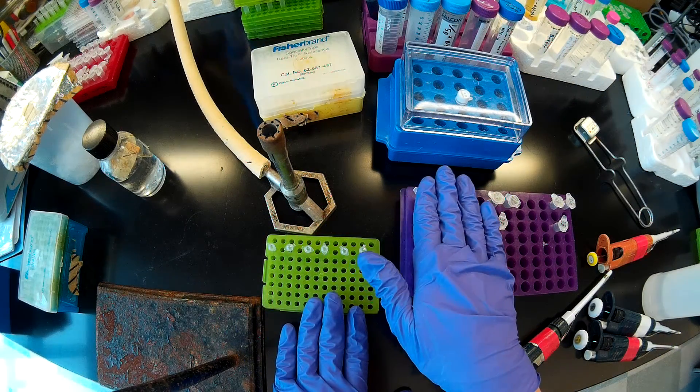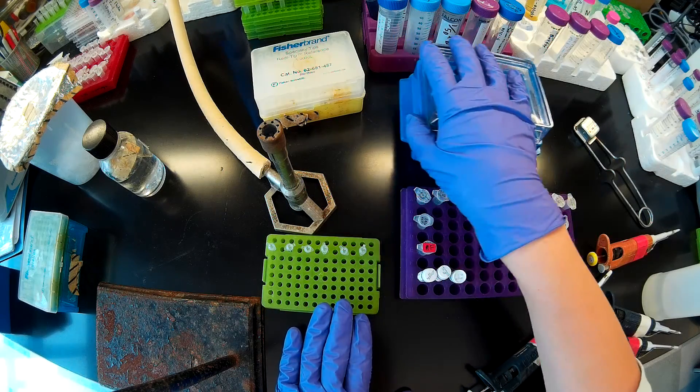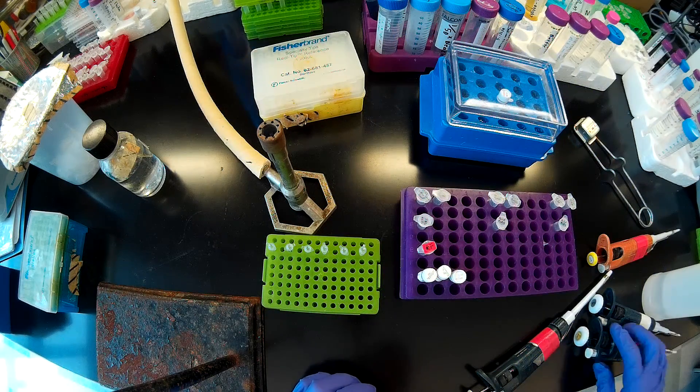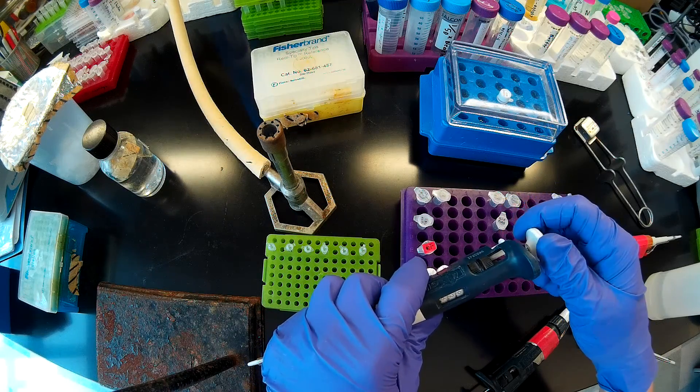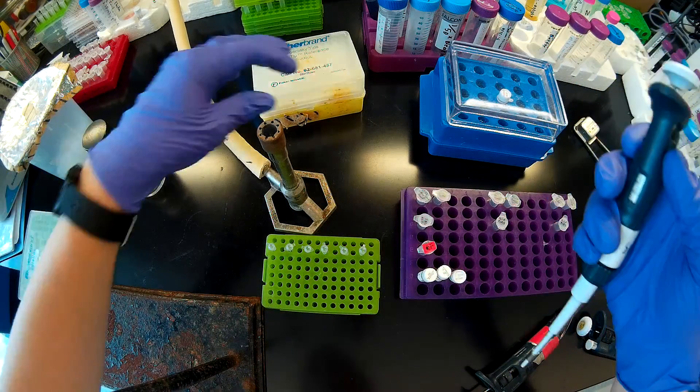To each one of these I'm going to add my reverse primer in order. I've already got the forward primer in there. So to each tube I'm going to add 2.5 microliters of the reverse primer.